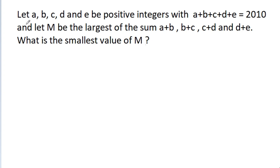In this video, we have given that a, b, c, d, and e are positive integers with a plus b plus c plus d plus e equal to 2010. Let m be the largest of the sums a plus b, b plus c, c plus d, and d plus e. Then what is the smallest value of m?